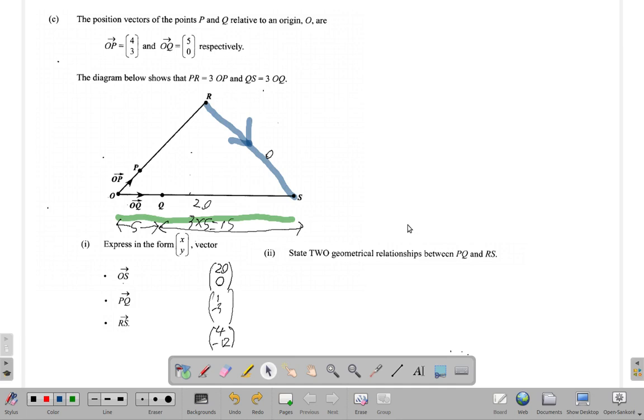So earlier we worked out OS to be (20,0). The vector OS (20,0) means you move 20 to the right; you don't move up nor down as you travel from O to S. If you travel from P to Q, you could go straight from P to Q, or you could go one to the right and three down. That's what it means: one to the right, three down. RS from R to S - you could travel straight from R to S, or you could move four to the right and then twelve down.